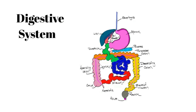Here we see a large portion of the digestive system. In this picture we see the esophagus, stomach, duodenum, jejunum, and ileum of the small intestine, and then the cecum, ascending colon, transverse colon, descending colon, sigmoid colon, rectum, and the anus of the large intestine. There are also some accessory organs we see here: the liver, the gallbladder, and the pancreas.